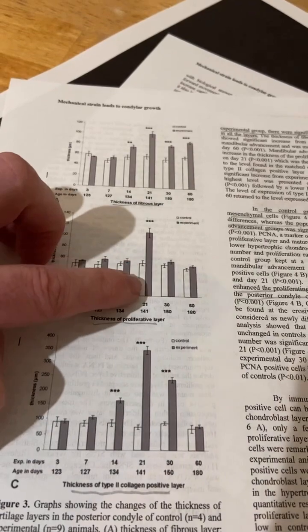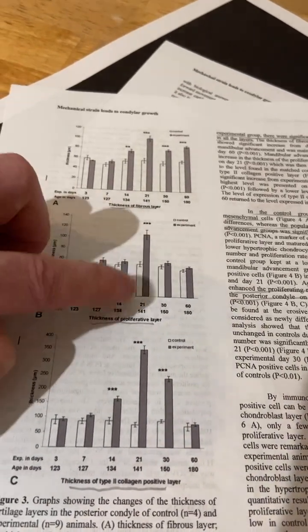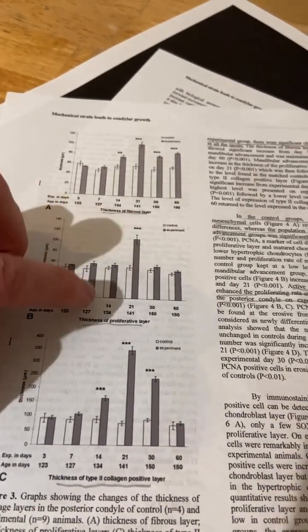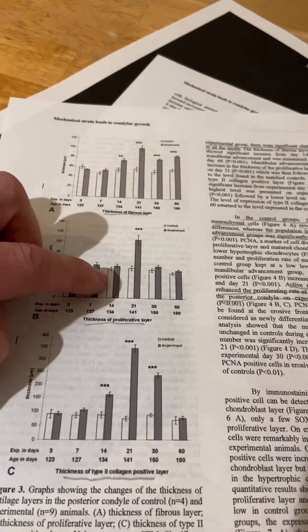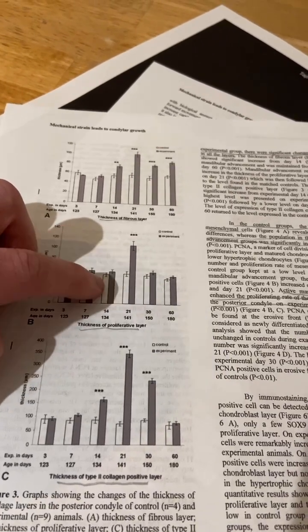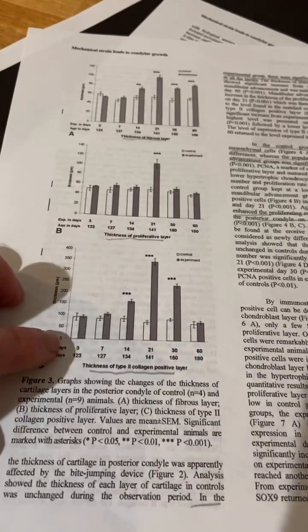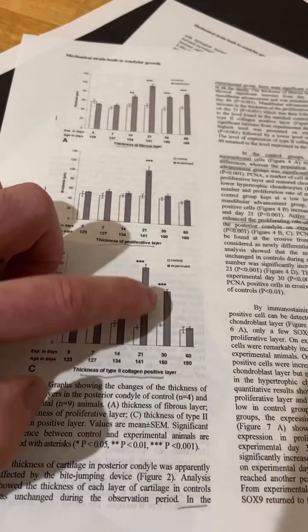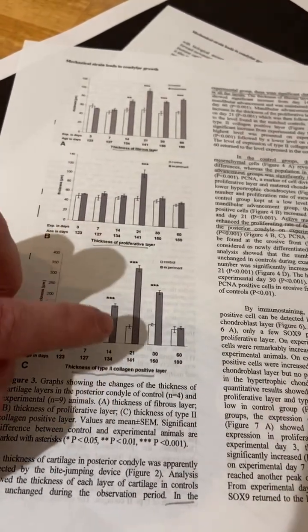Thickness of proliferative layer. There's that big peak in day 21. So we want to know why that is. And I don't think the paper kind of, that's kind of unanswered. So ideally we want to see some more studies on this. Again, there's that big peak kind of the big peak on day 30. Maybe the rats just got better at wearing the appliance at day 21.